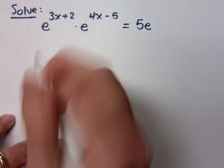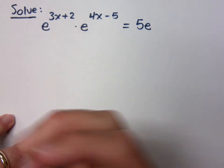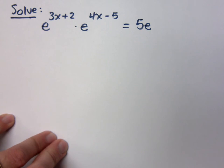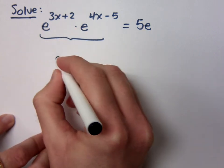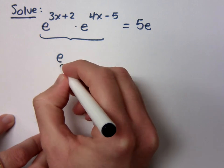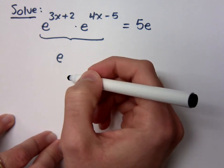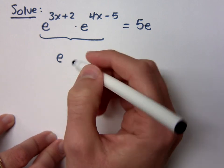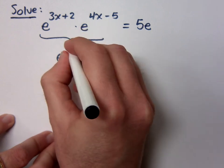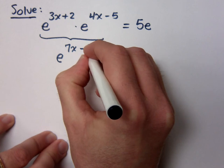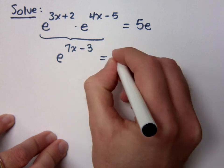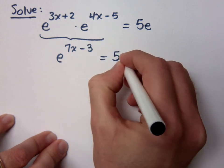What you do to the left, you have to do to the right. If you put in extra stuff or change something on the left, you have to do it on the right. But here, I can just take these guys and combine them because they have the same base. What do you do with the exponents when you have the same base and you're multiplying? You add them, so I just get 7x minus 3 equals 5e.